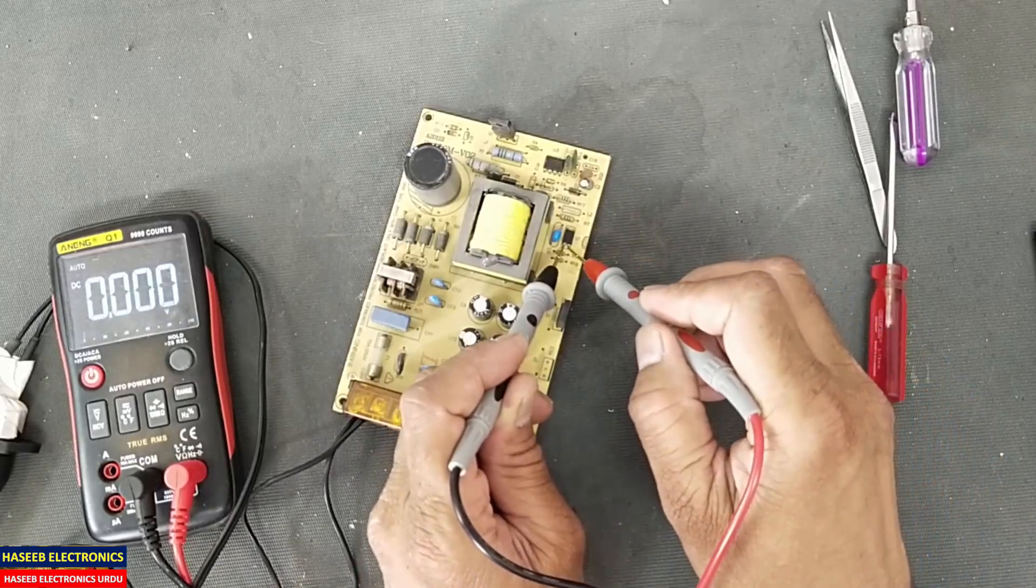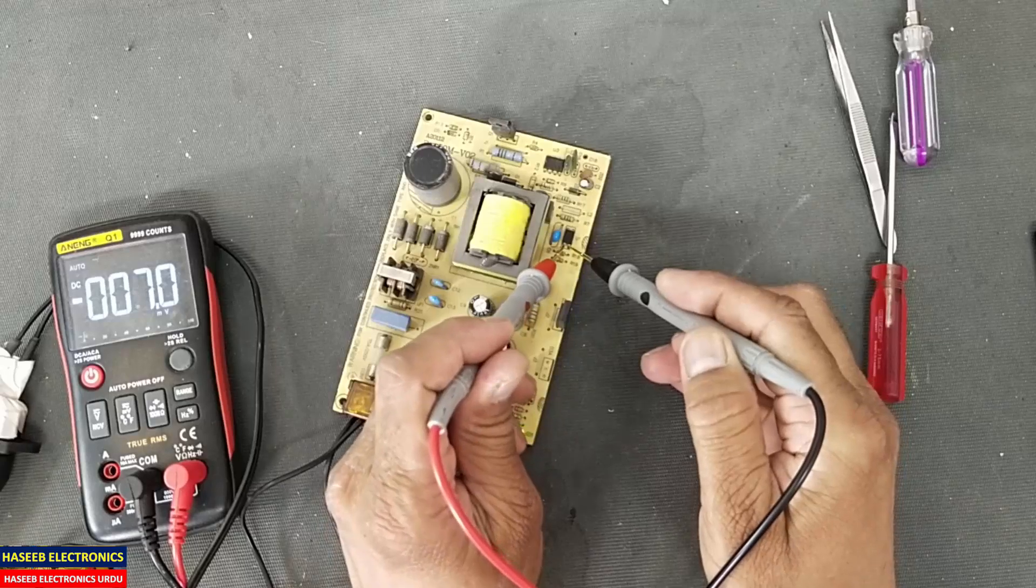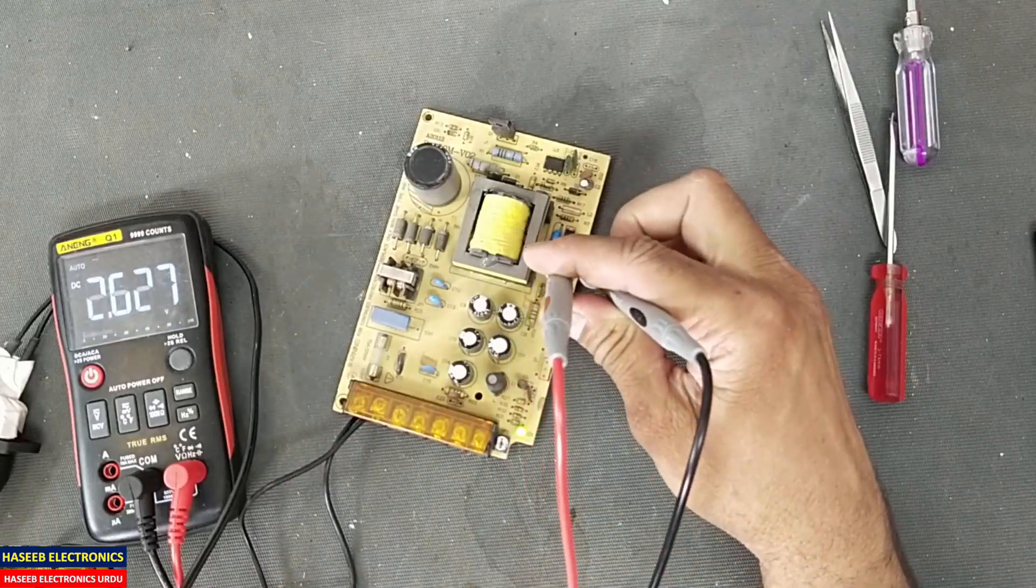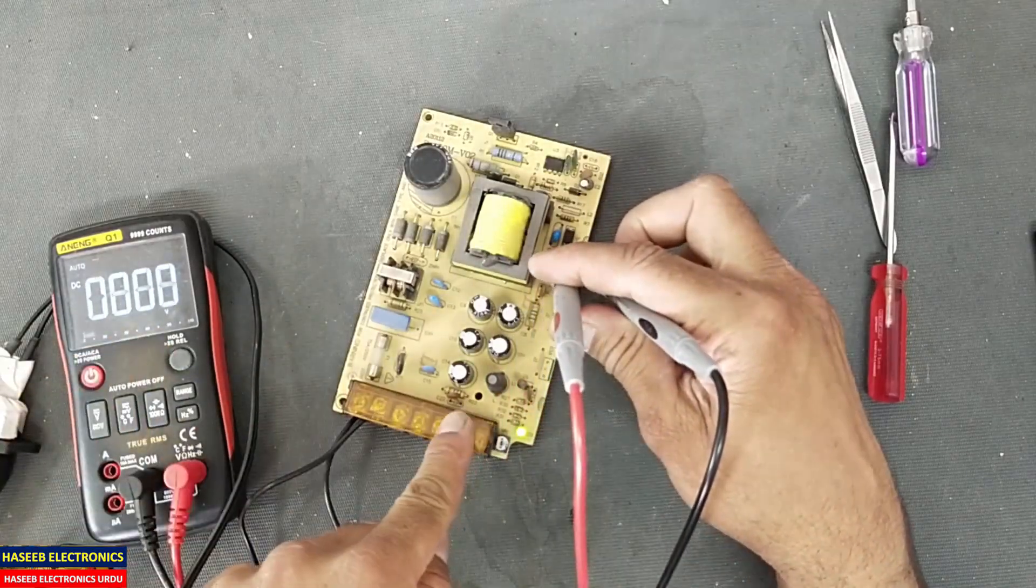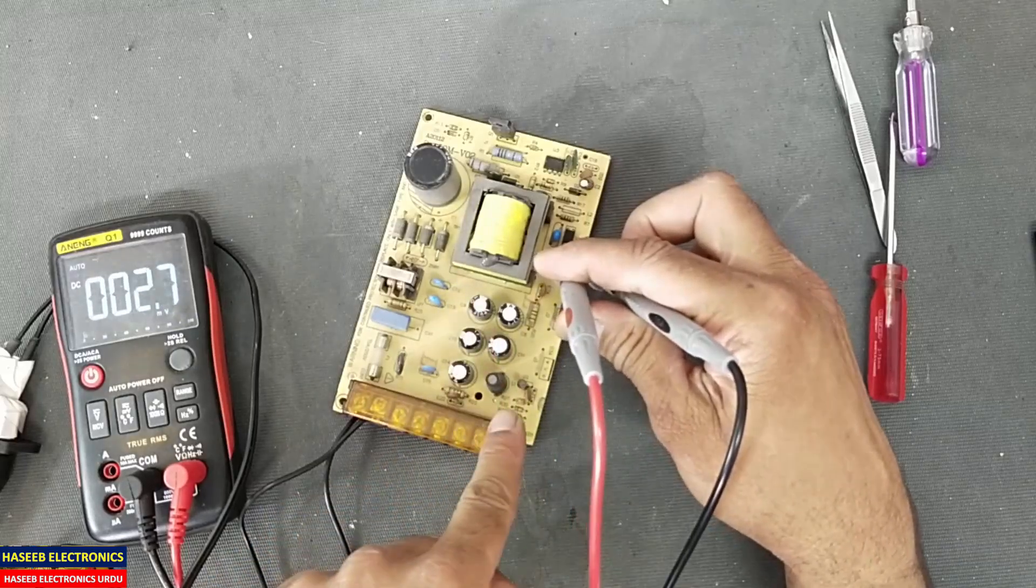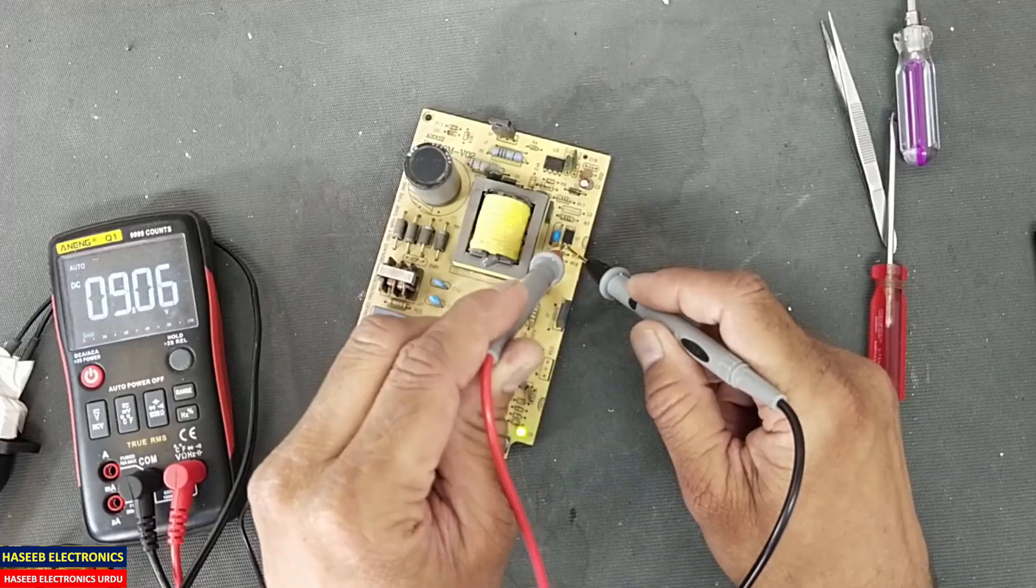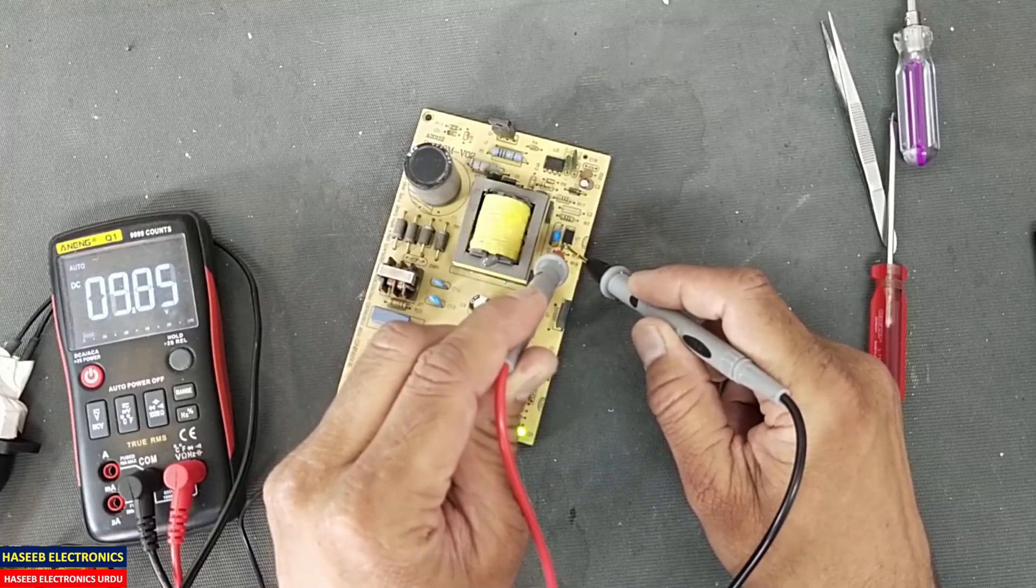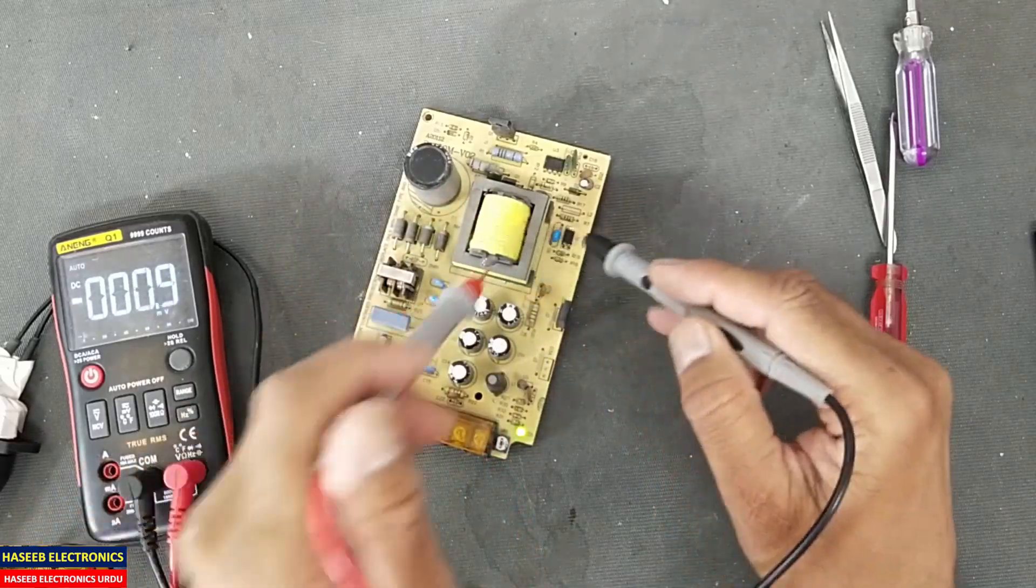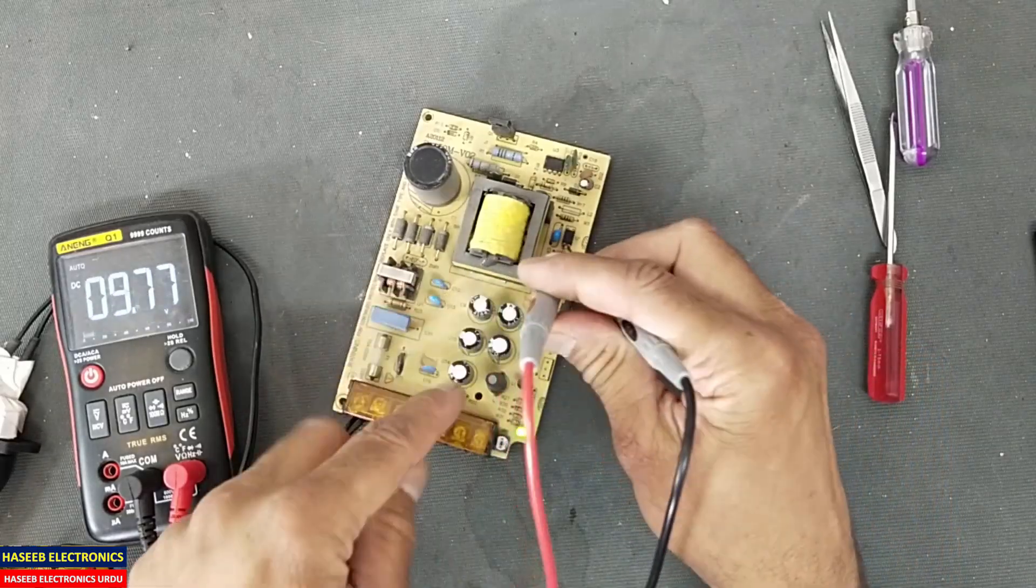Check voltage across the input. Yes, we can see this optocoupler has a problem. The circuit is driving, the circuit is switching and the feedback circuit is giving feedback, but we can see this optocoupler - it has a problem. It is fluctuating up to 10 volts. There is a tick-tick sound in the winding.